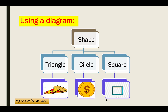In the middle boxes we have three shapes. For triangle, below it we have pizza slice. For circle, below it we have golden coin. And for square, below it we have photo frame. That is the way to classify things using a diagram.